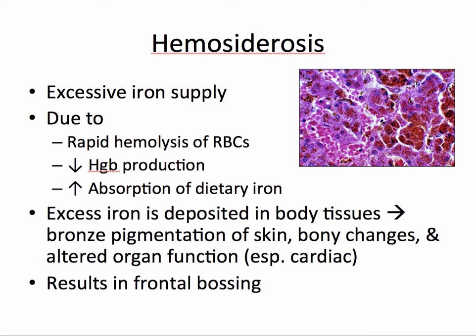Hemosiderosis is an excessive iron supply. This excessive iron is deposited in body tissues, resulting in bronze pigmentation of the skin, bony changes, and altered organ function. This slide in the top right corner shows liver tissue, and within it you can see the brown deposits of iron.